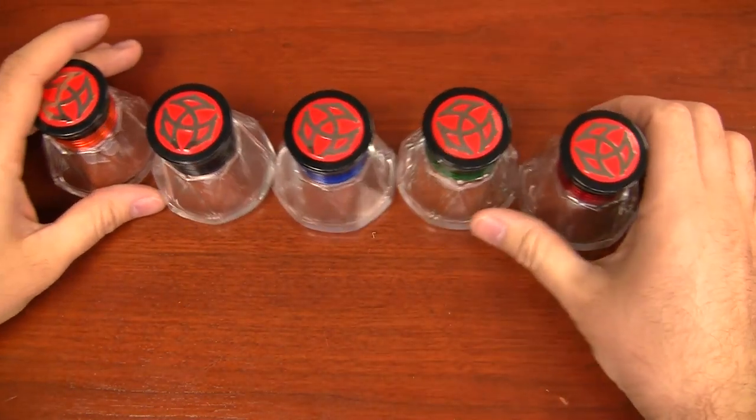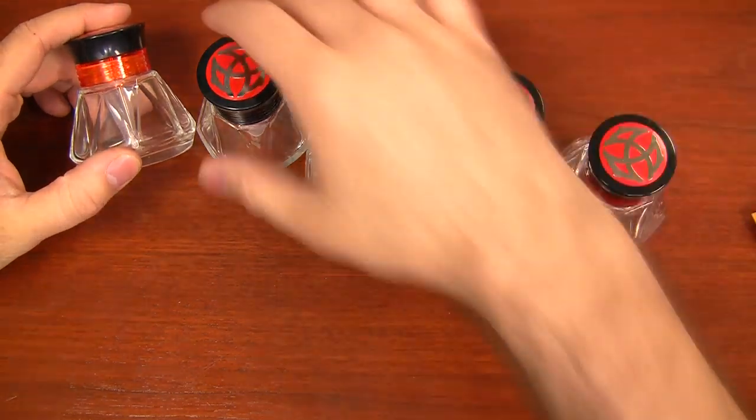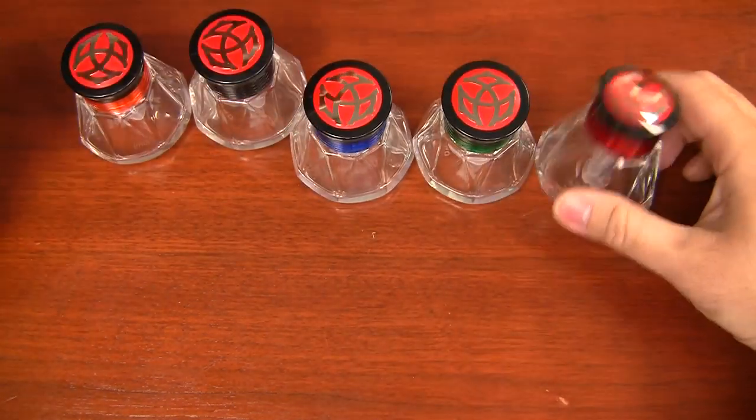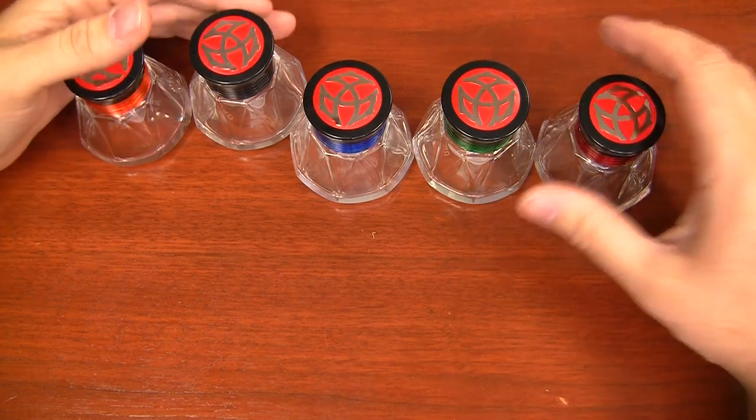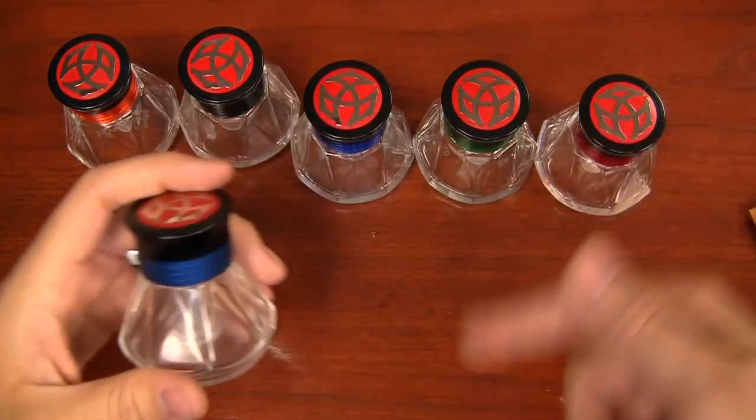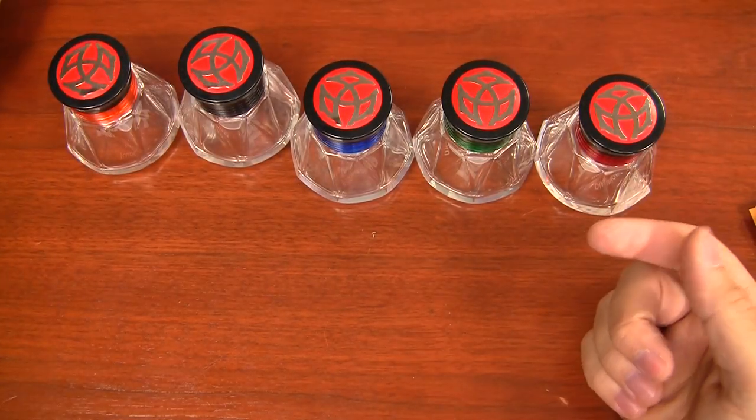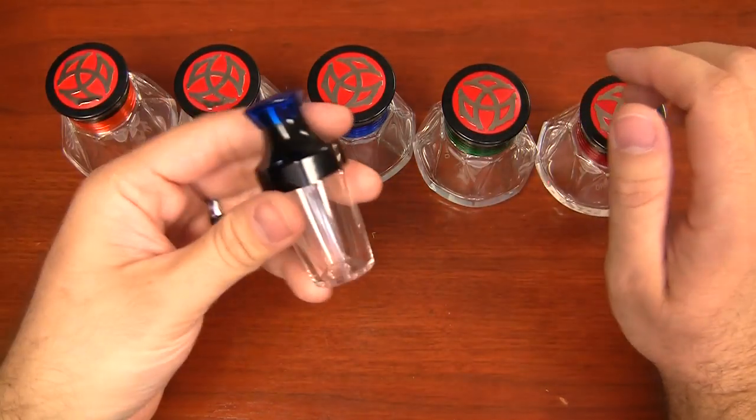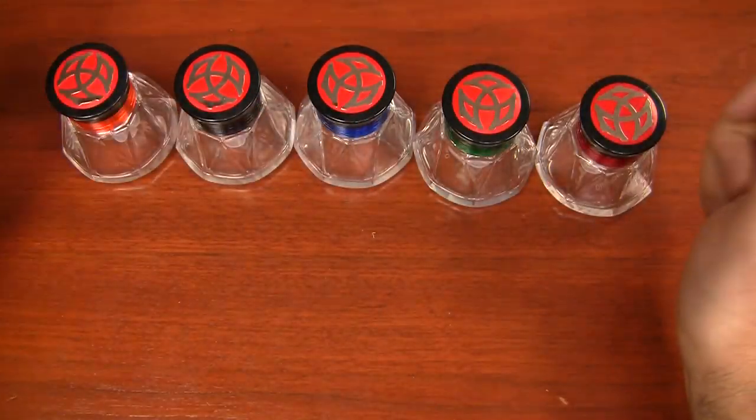It comes in five different colors. There we go. It comes in orange, black, blue, green, and red. Now, the regular Diamond 50, the aluminum style one, comes additionally in purple and silver. These ones do not have purple and silver. These are the same five colors that you'll see in the smaller VAC 20 bottle, which are all plastic as well.